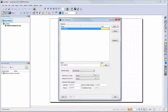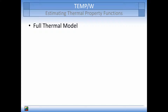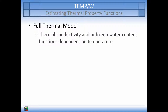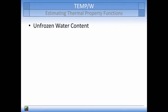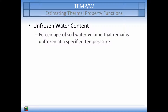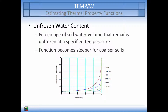Next, let's take a look at the full thermal model. Here, the thermal conductivity and unfrozen water content functions become dependent on temperature and are no longer held constant during the simulation. The assumptions of constant unfrozen and frozen volumetric specific heat capacity and water content still remain in this model type. The unfrozen water content function is defined as the percentage of soil water volume that remains unfrozen at a specified temperature. The function becomes steeper for coarser soils, indicating that soils with high gravel content will freeze the pore water at a much smaller temperature range than a soil with mostly clay particles.